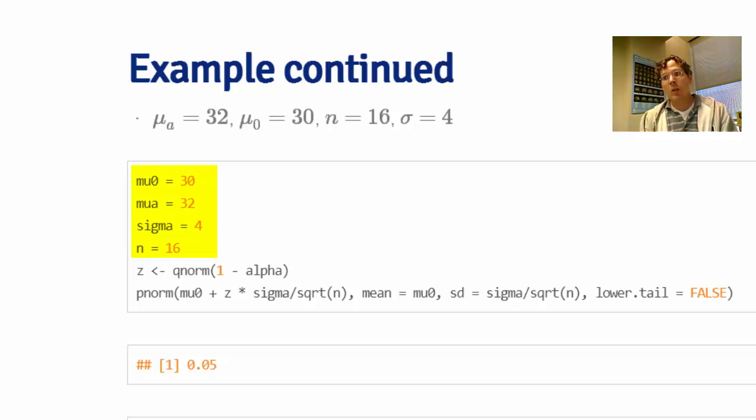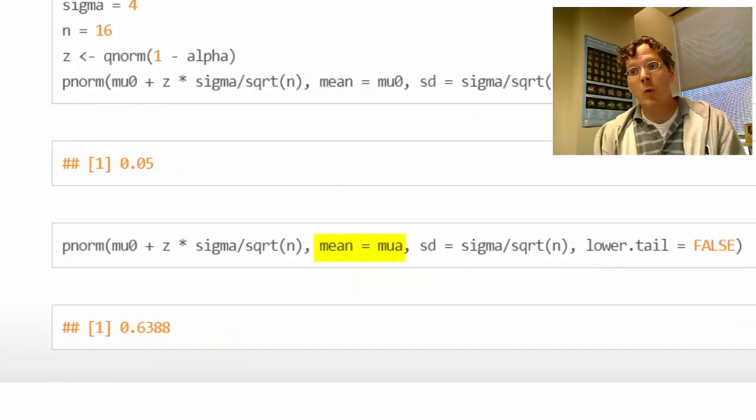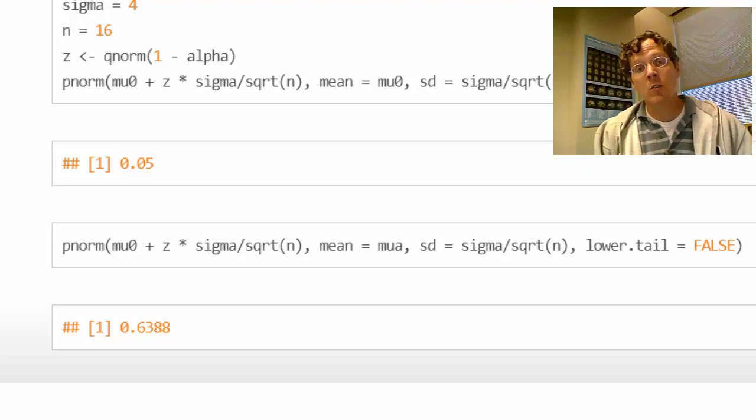Here's my z is my normal quantile. And then first I want to show you if I plug in mu equal to mu-naught, that it should give me 5%. So here I plug in mu equal to mu-naught and I get 5%. Now I'm plugging in mu equal to mu-a, 32, and you see that this jumps up to 64%. So there's a 64% probability of detecting a mean as large as 32 or larger if we conduct this experiment.